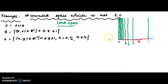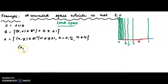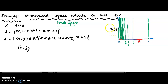Consider the point (0, 1/2). Here x is 0 and y is 1/2. The point (0, 1/2) lies on the left boundary segment of the comb space.